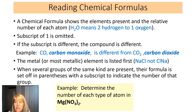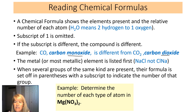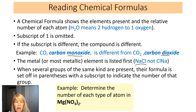If the subscript is different, the compound is different. For example, CO is carbon monoxide and CO₂ is carbon dioxide — they're very different compounds. If you have a metal in the compound, you write it first, so it's NaCl, not the reverse. Sometimes several groups of the same kind are present, and their formulas are set off by parentheses, such as NO₃ with a 2 outside, meaning two groups of NO₃.